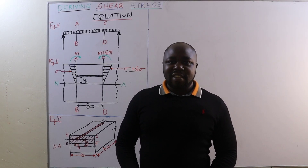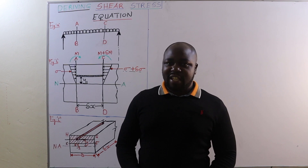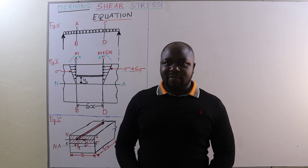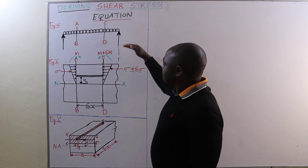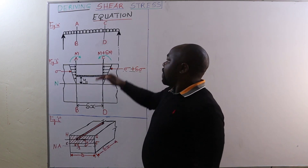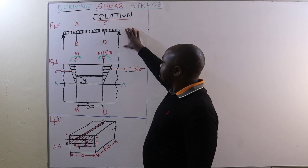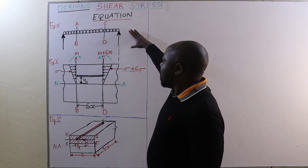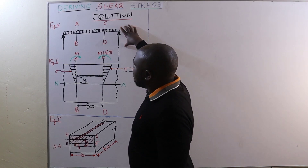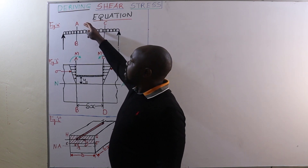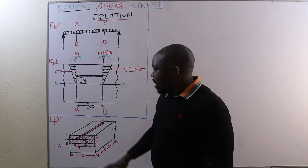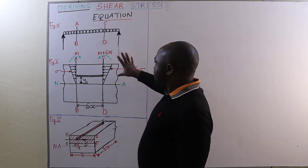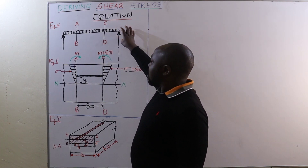Welcome to today's lesson whereby we are going to derive the shear stress equation. To derive the shear stress equation, we are going to consider three figures. Figure A shows a simply supported beam carrying a UDL over the whole of its span. This simply supported beam has two sections: section AB as well as section CD.